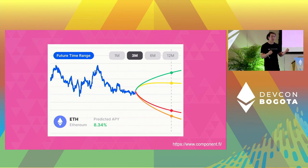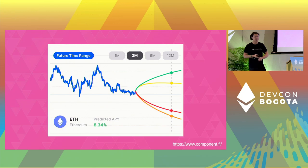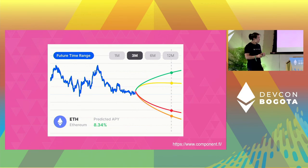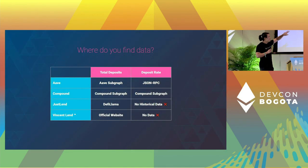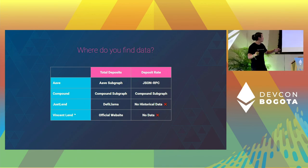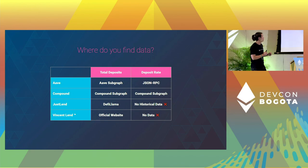In order to do that, they need a lot of historical data — historical data on interest rates, on total deposits — from different lending protocols across different networks. This is a small example to illustrate where you might go to find all this data today. As you can see, there are many different data sources you need to hit, depending on which lending protocol you want to pull data from.